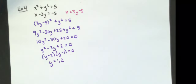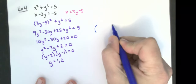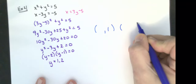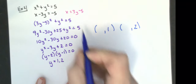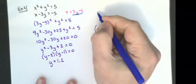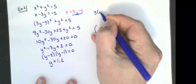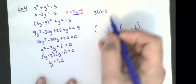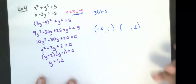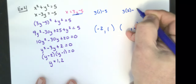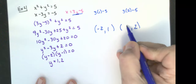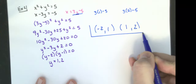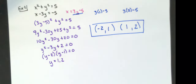My y values are 1 and 2. Using x equals 3y minus 5: for y equals 1, x equals 3 times 1 minus 5, which is 3 minus 5, which is negative 2. For y equals 2, x equals 3 times 2 minus 5, which is 6 minus 5, which is 1. So those are the two points where that line crosses the circle.